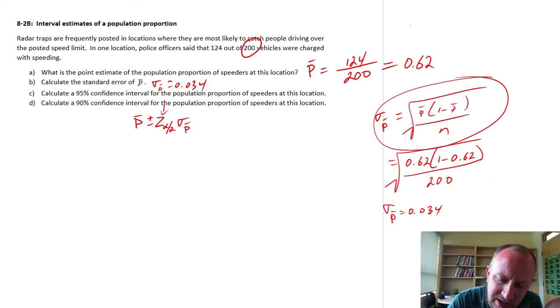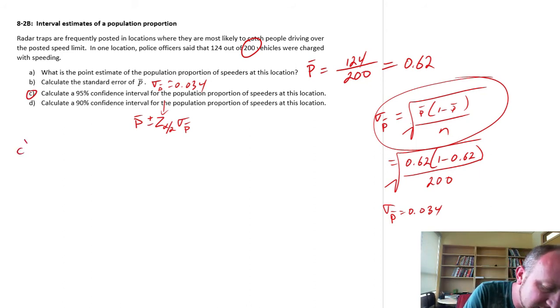This is why we're always using the z distribution, or the standard normal distribution, as our source of critical values for these calculations. This is just that corresponding critical value for our level of confidence times the standard error. Same formula as when we were doing means. The formulas are very similar to one another. Now let's get our 95% interval estimate.